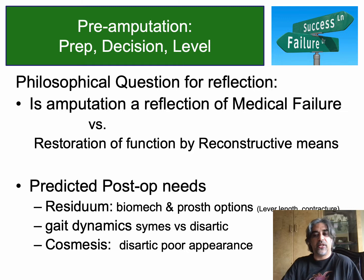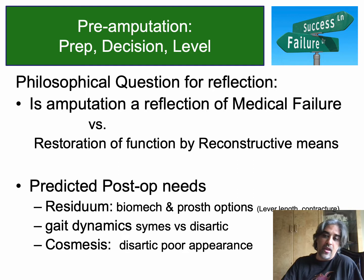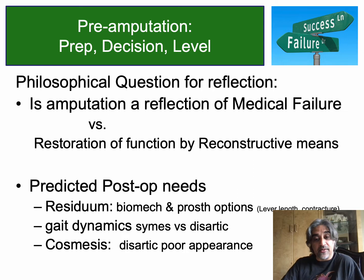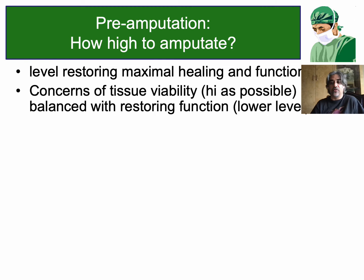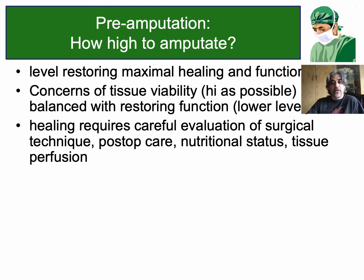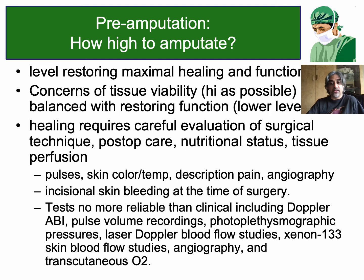Is amputation medical failure or a restorative reconstruction process? Either way, you might advise the surgeon on amputation level based on prosthetic and cosmetic consequences. Even though the surgeon will probably make the decision independently, it's good to know how high we can amputate. We don't want to keep dead tissue that can't heal. On your boards, they're going to ask you about transcutaneous oximetry, ankle brachial index, and a couple of other things related to determining amputation level.